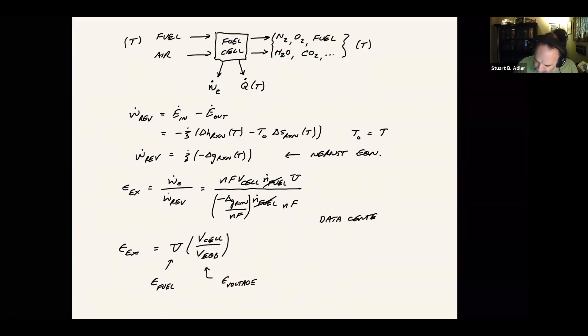So if we take our data center as an example, let's say we're only using 80% of the fuel, and then let's say we're running at a cell voltage of 0.7 volts. So that means Epsilon voltage, this would be 0.7 volts divided by 1.03 volts, which was the Nernst potential that we calculated. This is 0.67. So putting those together, we're talking about an exergetic efficiency of about 53%. So independent of any considerations of what we might have done with thermal energy, this is telling us how good a job did we do of converting the fuel into electricity with the fuel cell.